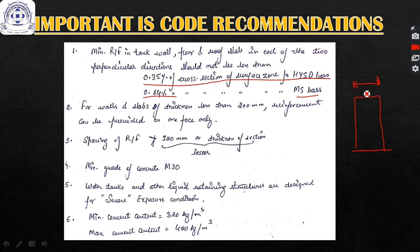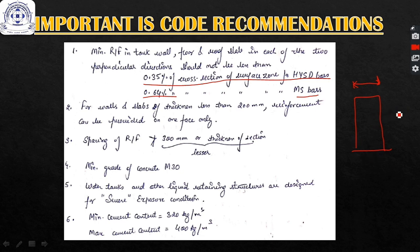The surface zone normally has a minimum of 200 mm thickness for a particular tank wall or tank slab. Spacing of reinforcement should not be greater than the lesser of 300 mm or the thickness of the section. Minimum grade of concrete is M30. The cover provided in tank walls or base slabs is higher than for beams and columns because these are exposed directly to water.